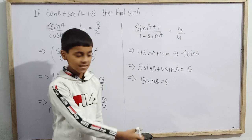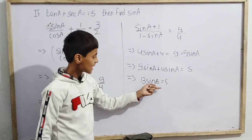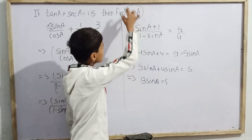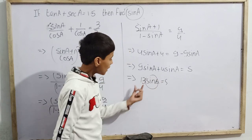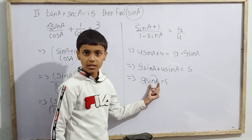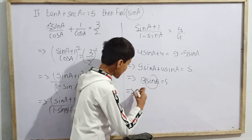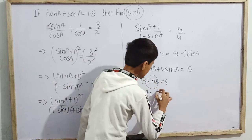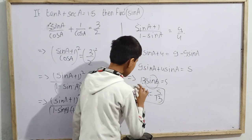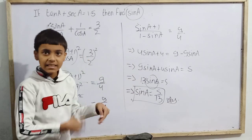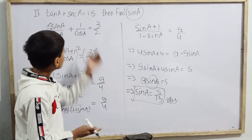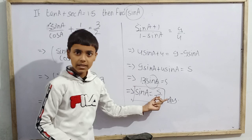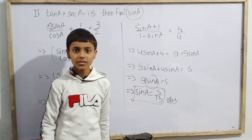Just as 9x + 4x = 13x, we have 13·sin(a) = 5. Dividing both sides by 13, we get sin(a) = 5/13. So the correct answer is: if tan(a) + sec(a) = 1.5, then sin(a) = 5/13. Jai Hind, Jai Bharat!